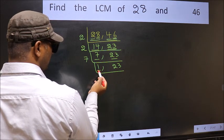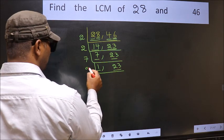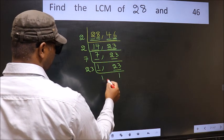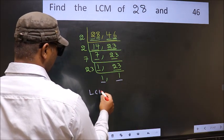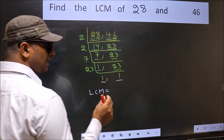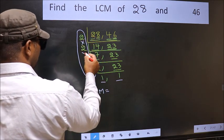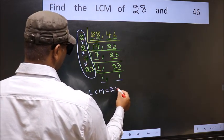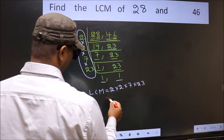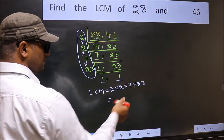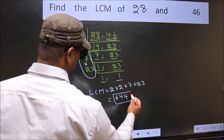Now we got 1 here. So focus on the other number 23. 23 is a prime number. So 23, 1's 23. So we got 1 in both the places. So our LCM is the product of these numbers. That is 2 into 2 into 7 into 23. When we multiply these numbers, we get 644 is our LCM.